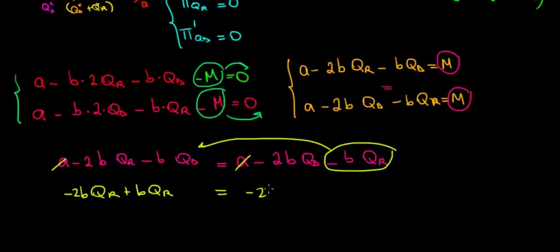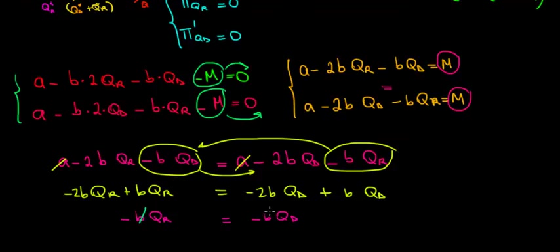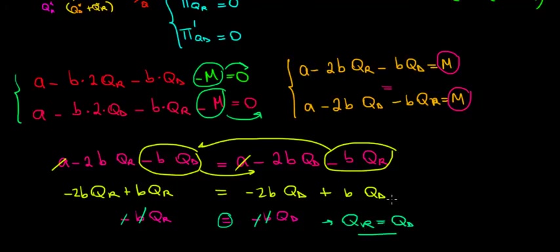On the left we have minus 2b·qr plus b·qr, which is minus b·qr. On the right we have minus 2b·qd plus b·qd, which is minus b·qd. We cancel the constants: b and b cancel, and the negatives cancel. We're left with the key relationship: qr equals qd.